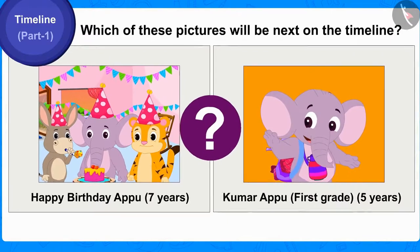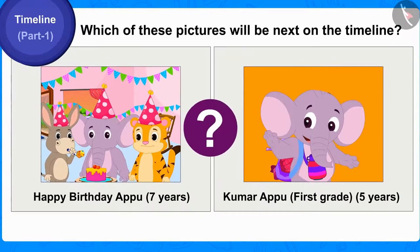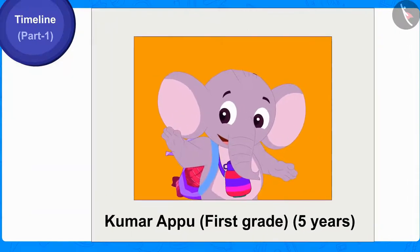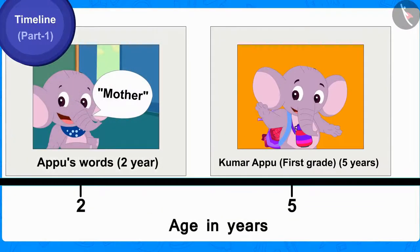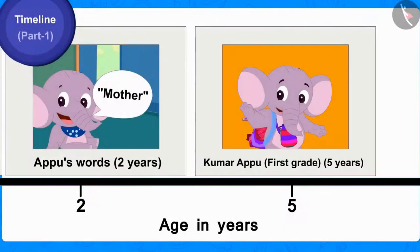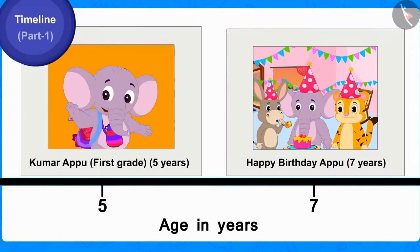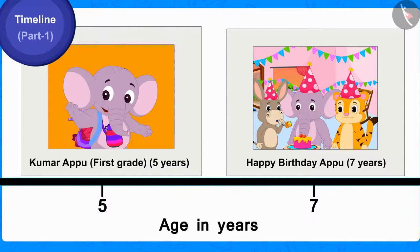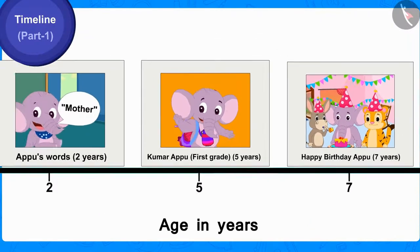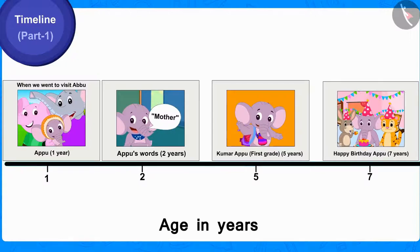And which of these pictures will be next on the timeline? This picture of Appu, in which Appu was in first grade, will be shown chronologically next on the timeline by writing the age of five years on it. And finally, the picture of Appu's seventh birthday will be shown by writing the age of seven years on the timeline. In this way, Appu's timeline is ready!